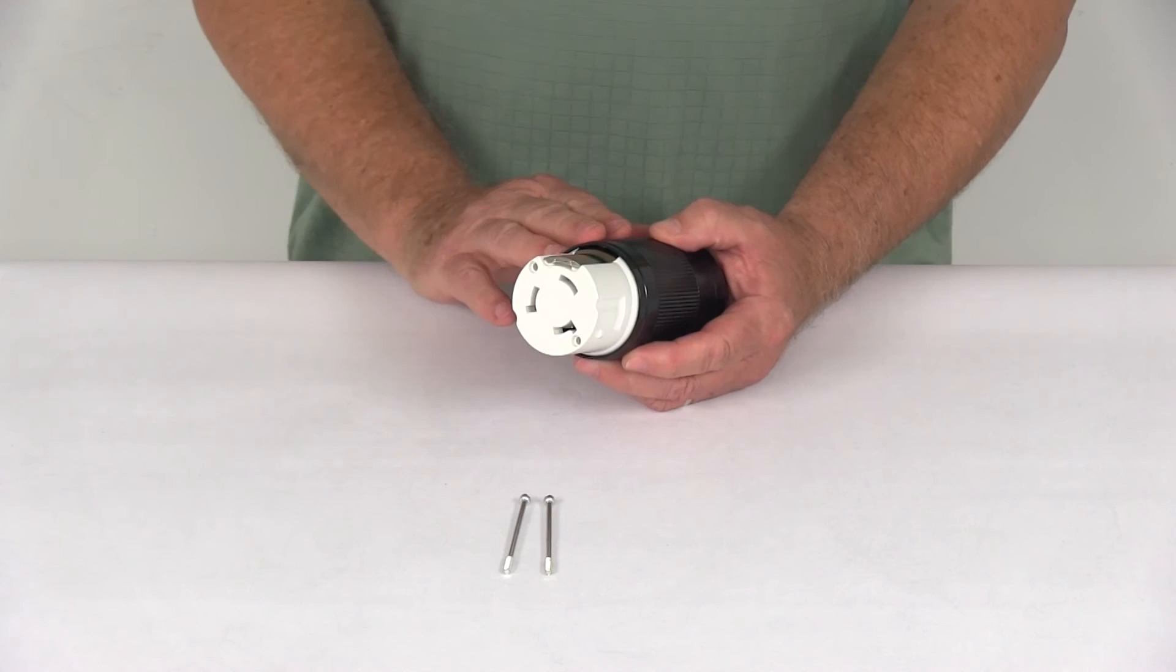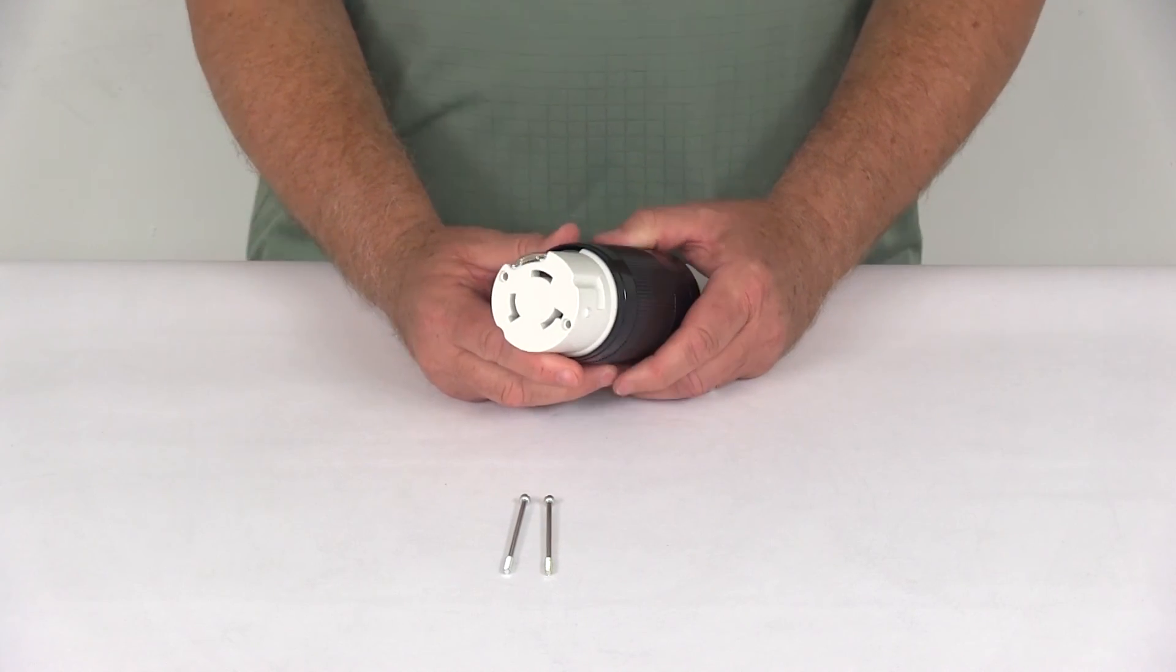That should do it for the review on the Mighty Cord 50 amp detachable female twist lock connector.